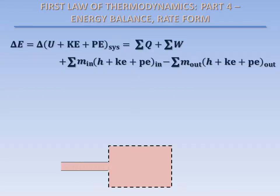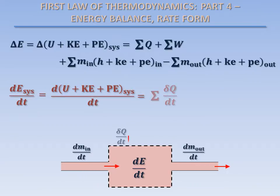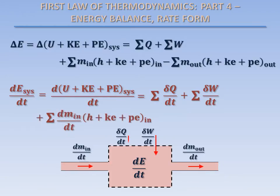It's useful to write our energy balance in a rate form, especially when mass is flowing into and or out of our system. The change in total energy of the system with time, or the rate of change of energy of the system, is equal to the sum of the rate at which heat energy is transferred into and out of the system, plus the sum of the rate at which work energy is transferred into and out of the system, plus the rate at which energy is transferred into the system by mass flow, minus the rate at which energy is transferred out of the system by mass flow.